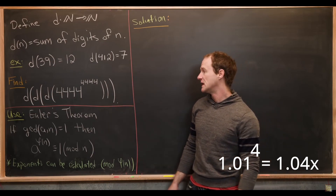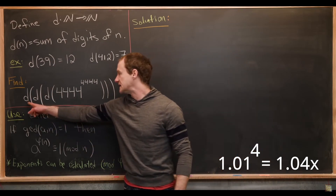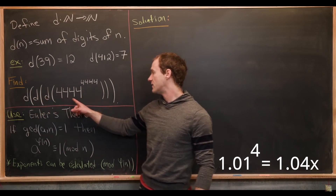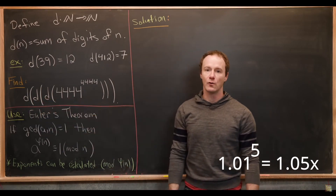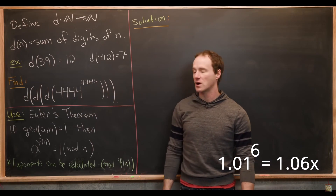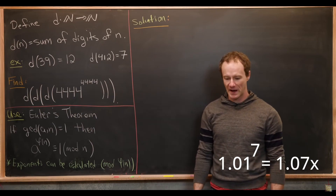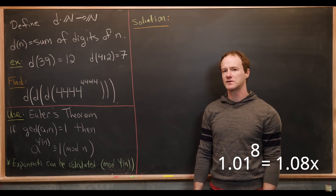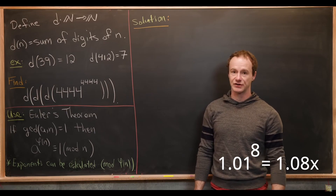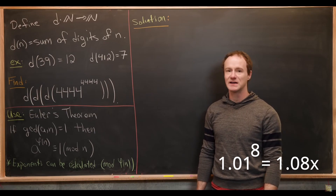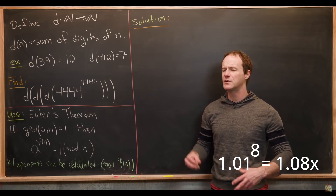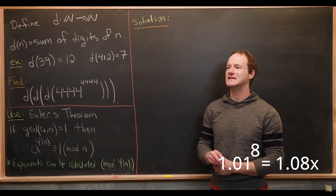Our goal is to find d of d of d of 4,444 to the 4,444 power. We're going to use Euler's theorem, sometimes called Euler's generalization of Fermat's little theorem, to help us out here. But we're not going to review it in complete detail.